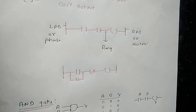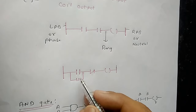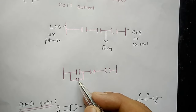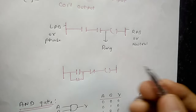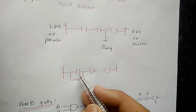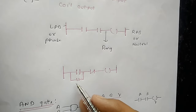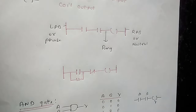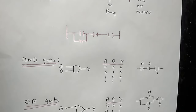Then what will you have to do? You have to use a holding contact. With the help of this, if you press this contact, it acts as normally open again, and if it acts as normally closed, it allows power supply for the second, third, and fourth time. So this is called a holding contact.